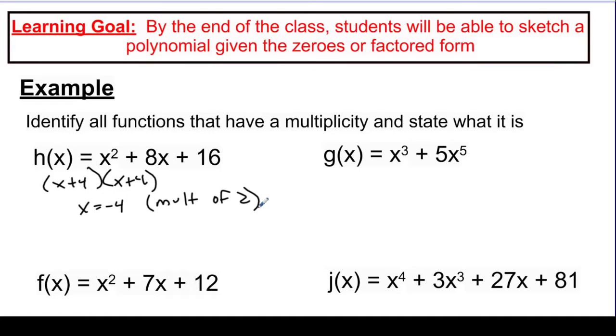I would have a multiplicity of 2. And that's describing to people that each of these x plus 4s is going to give me a negative 4 solution, and I want to let them know that it came from two different factors, that same solution, because again, that's going to eventually affect the graph.